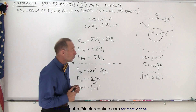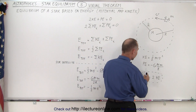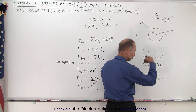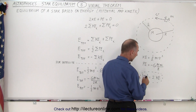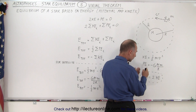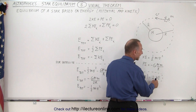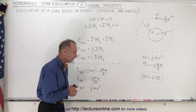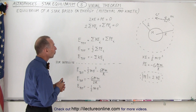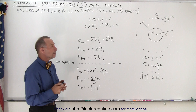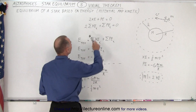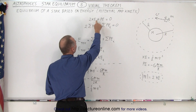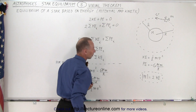We also know that the absolute value of the potential energy — because its potential energy is negative except at infinity — the absolute value thereof will be twice the kinetic energy. That is always the case for a satellite. So we can say that twice the kinetic energy plus the potential energy must add up to zero.